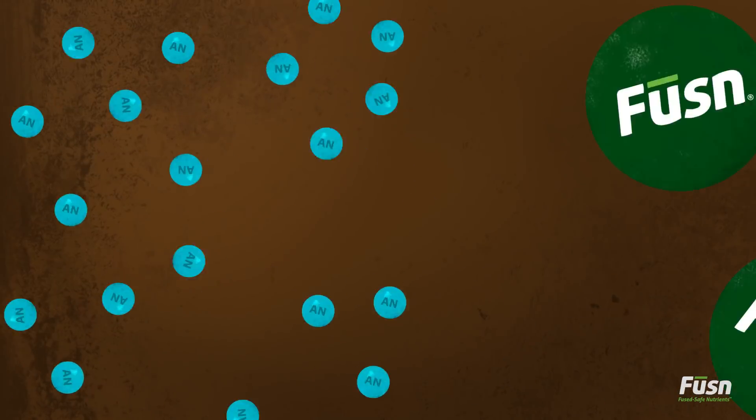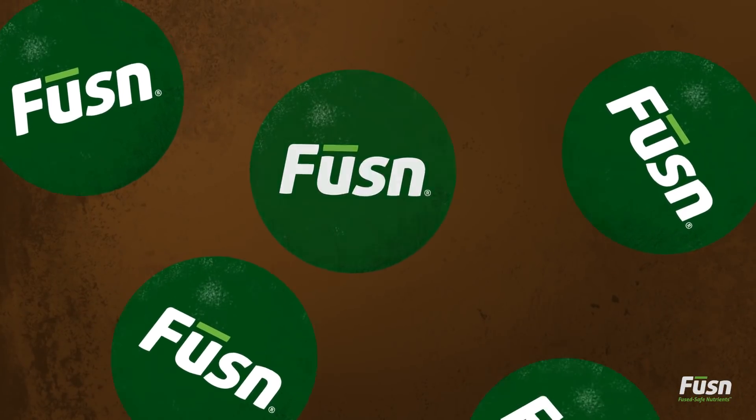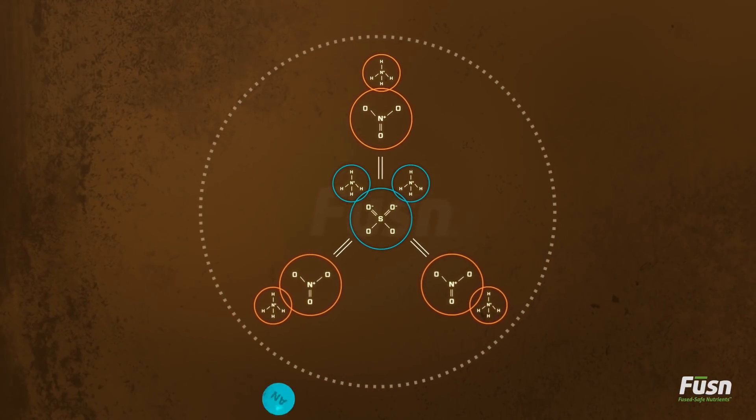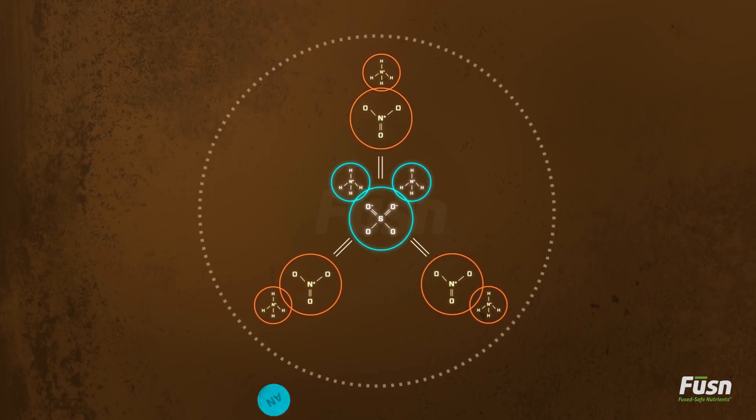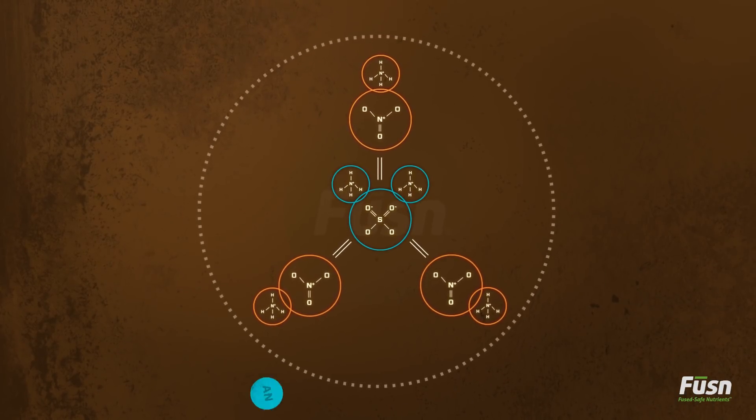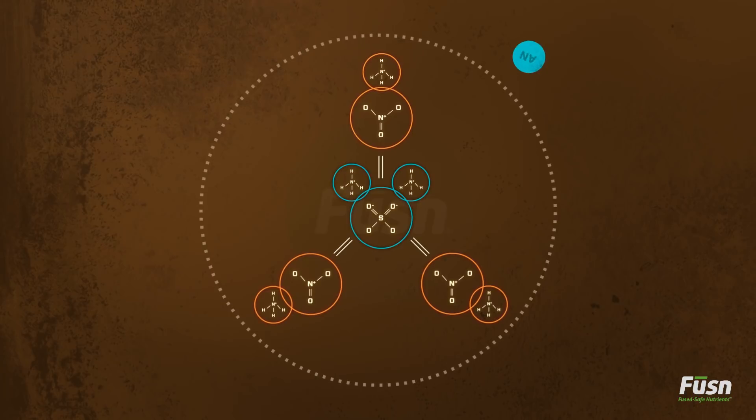Free ammonium nitrate can be volatile. Inside every fusion molecule is a double salt bond of 3 ammonium nitrate and 1 ammonium sulfate, leaving less than 1% of the dangerous compound free.